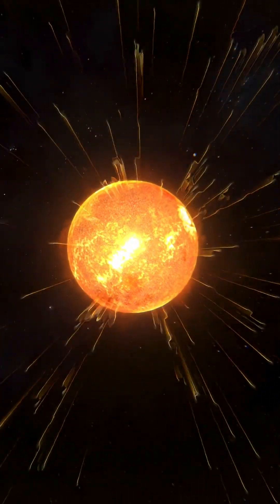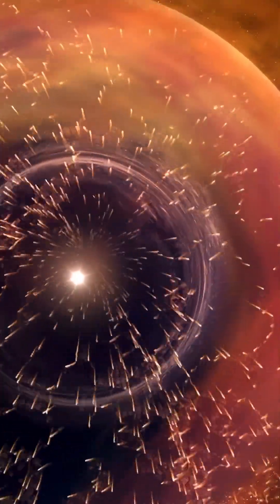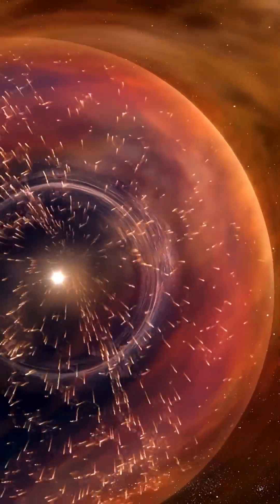Our heliosphere, this giant bubble around the sun and planets, is like our house in space because it keeps out the weather coming from the galaxy beyond.